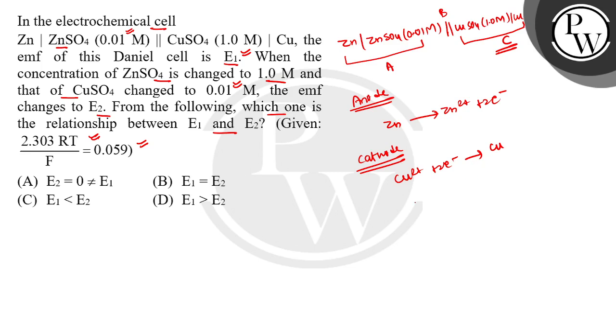So now the EMF formula: EMF is equal to E cell. E cell is equal to E° cell minus 2.303 RT upon nF log Q. Q, what is the reaction quotient? Q is equal to Zn 2+ upon Cu 2+.